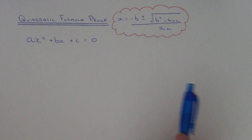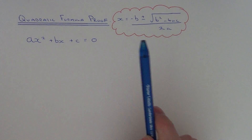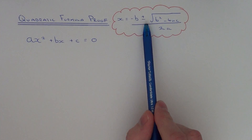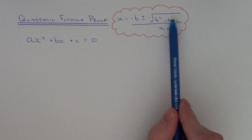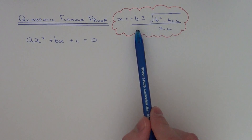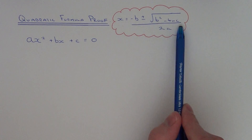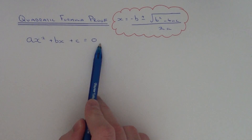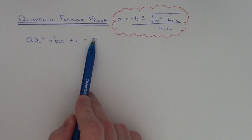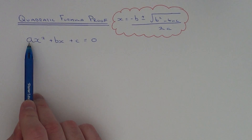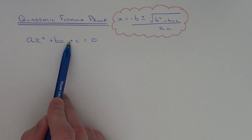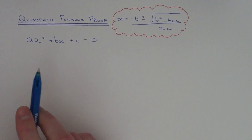I'm going to show you how to prove the quadratic formula: x equals minus b plus or minus the square root of b squared minus 4ac, all divided by 2a. To do this, first write your quadratic equation in the form ax squared plus bx plus c equals zero.